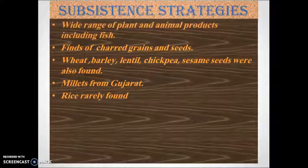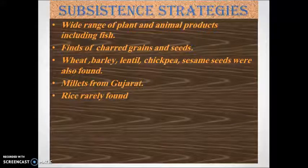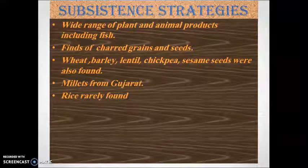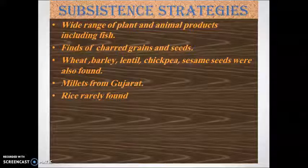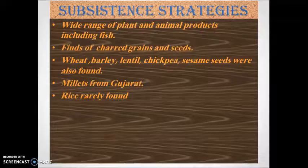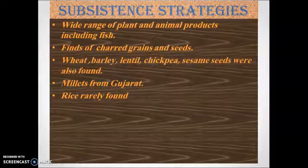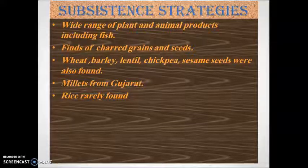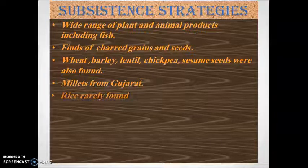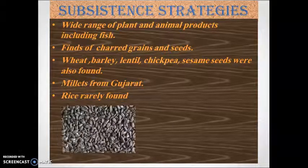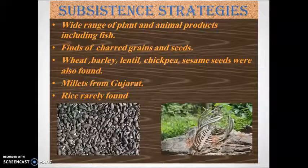Now come to the subsistence strategies of the Harappan people. On the basis of findings or artifacts, we can say that the Harappan people ate plant and animal products, including fish. Finds of charred grains and seeds — wheat, barley, lentil, chickpea, and sesame seeds — were also found. Millets were found from Gujarat. Rice was rarely found, which indicates that rice was not an important part of their food habits.